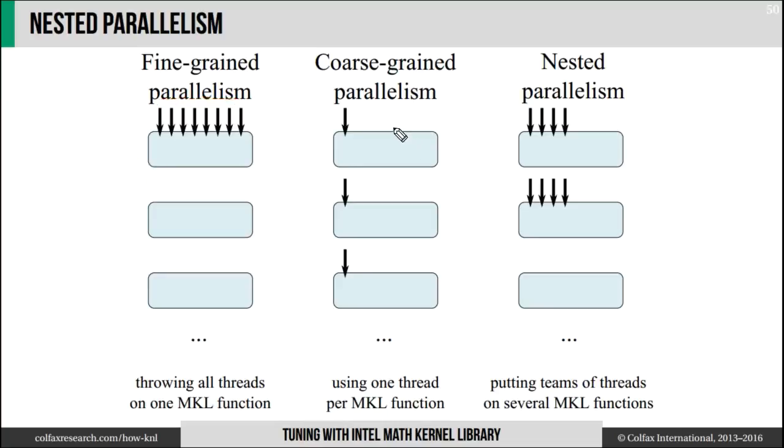With this coarse-grained parallelism where you process multiple datasets at once, the advantage is that if you have many datasets, potentially you expose more parallelism. But the disadvantage is that you have to keep multiple datasets in caches at the same time, which means that your data locality may be degraded.